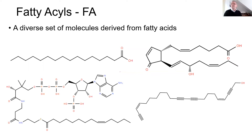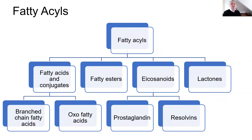A typical classification for the fatty acyls might divide them into the fatty acids and conjugates, which are then further divided according to the chemical functionality of the chain — whether it's straight or branched, whether it has keto groups or oxo groups. Fatty acyls divide into fatty esters with esterification of the acid group. Some very specific classes — the eicosanoids, because they're very important biologically — are then subdivided into their functional roles: the prostaglandins, the resolvins, and more classifications of fatty acyls.